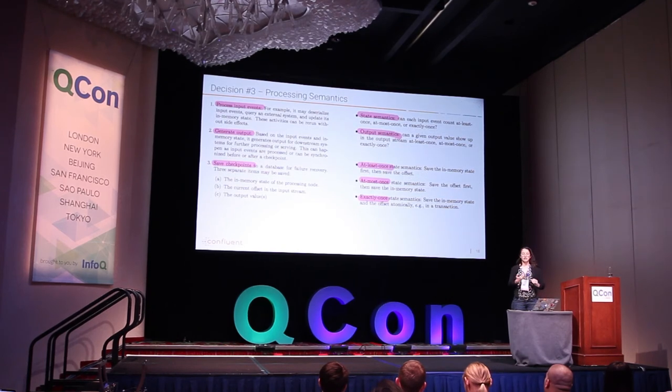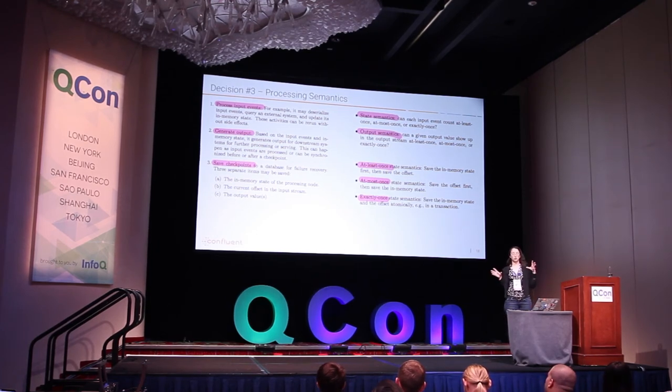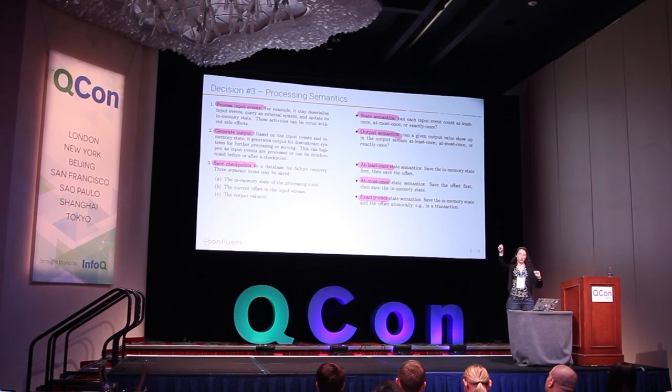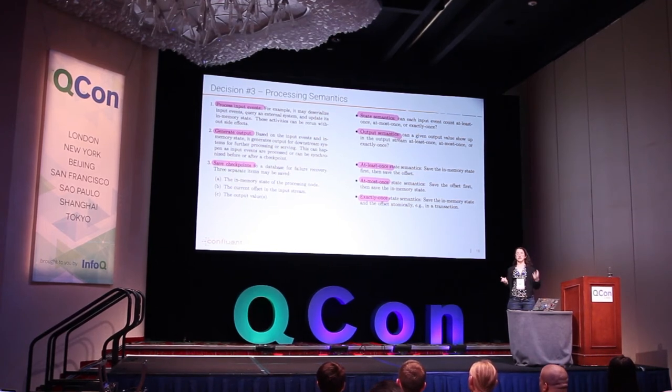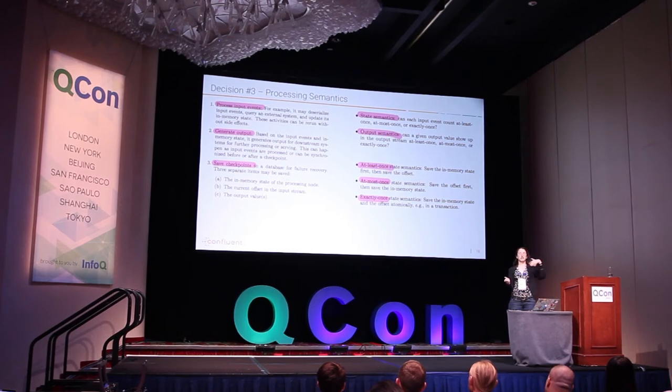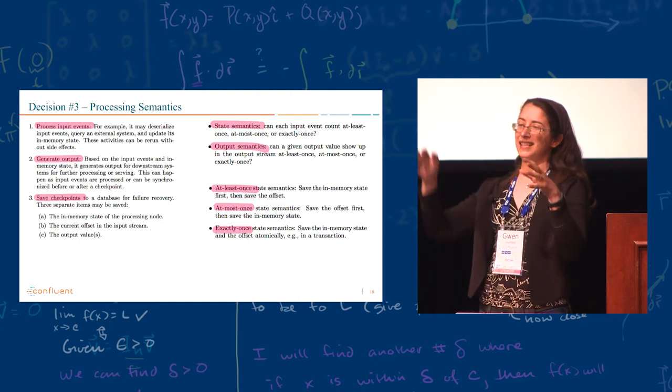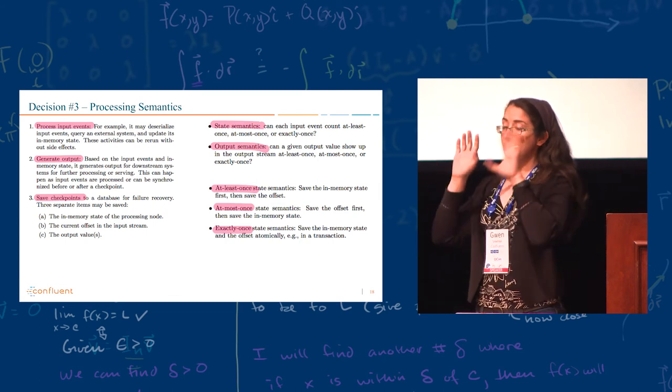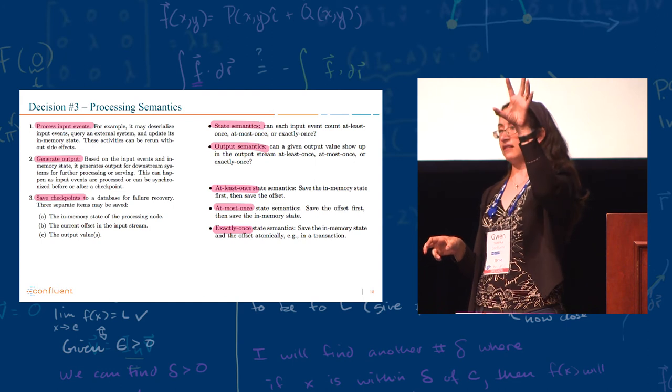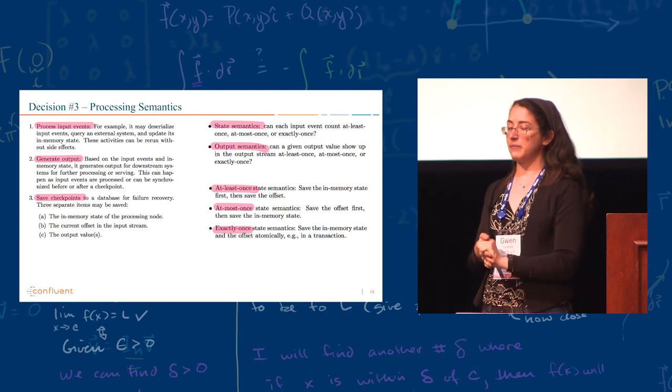Decision three is processing semantics. And these actually do very well. First of all, they say, what is it that stream processors do? They read inputs, they write outputs, and they also write checkpoints. On occasion, they have to say, this much we already processed. And then they say that some services are stateful, which means that they also need to preserve state and checkpoint their state. So they're going to have semantics for the state, how stateful services are going to maintain their state, and semantics for the output.